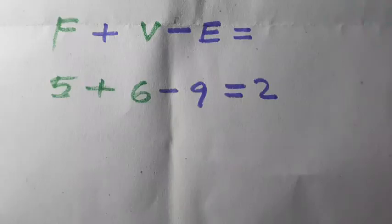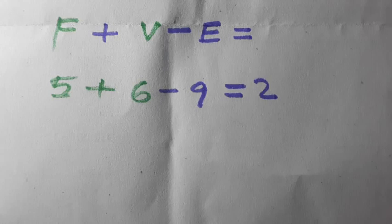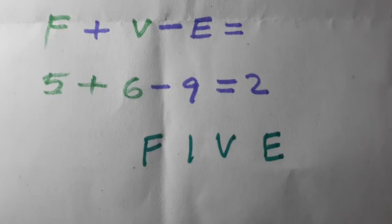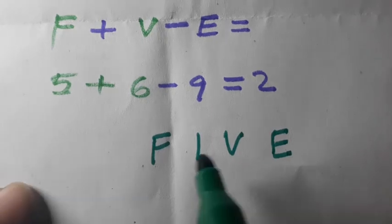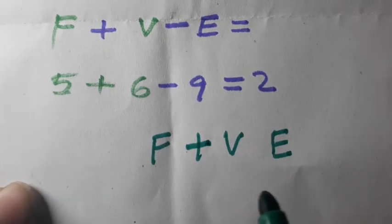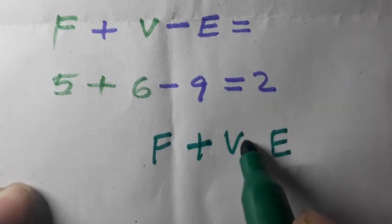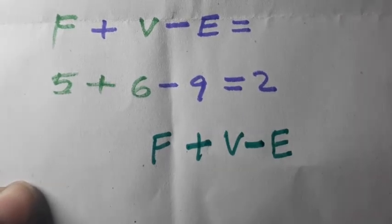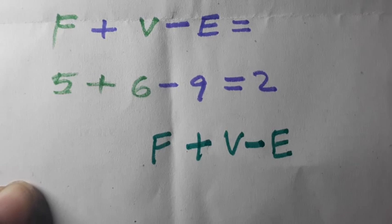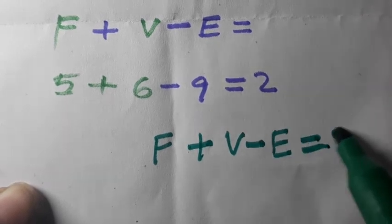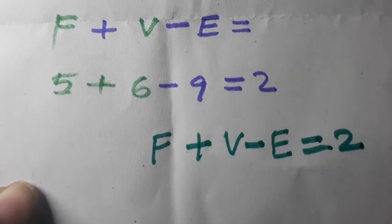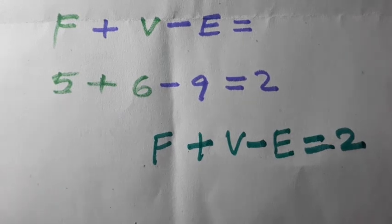Now shortcut to remember Euler's formula: we have to write F + V - E. One horizontal line here and make it plus, and one horizontal line here and make it minus, is equal to 2 always. So that's all in this video. Thank you for watching.